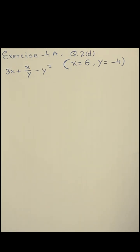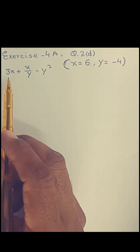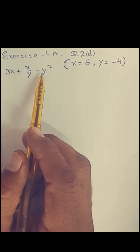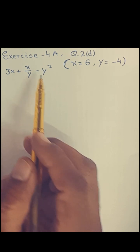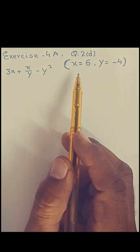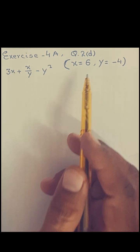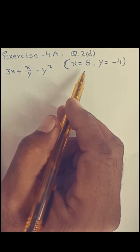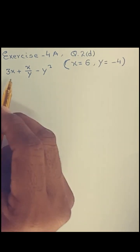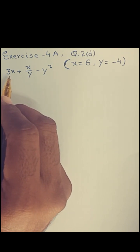Assalamu alaikum, level 7. This is our problem from exercise 4A, question 2, part D, in which we have to evaluate an algebraic expression: 3 times x plus x over y minus y squared. The values of the variables are already given: x is equal to 6 and y is equal to minus 4.